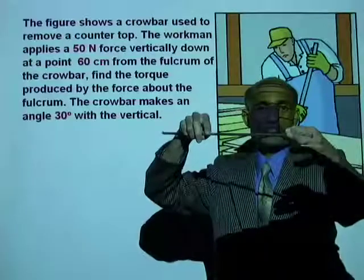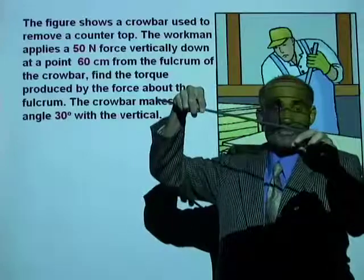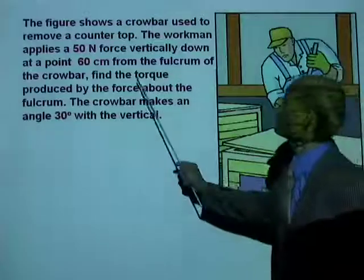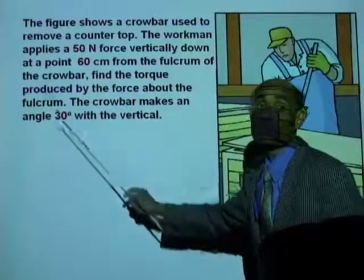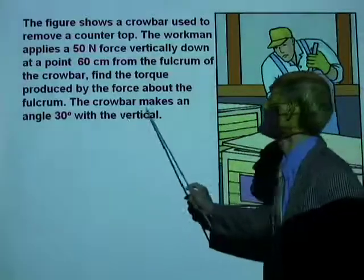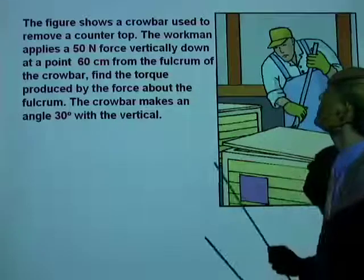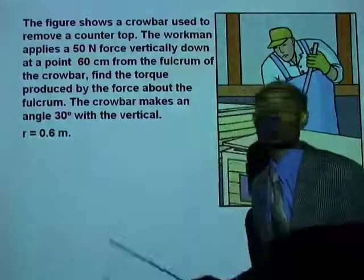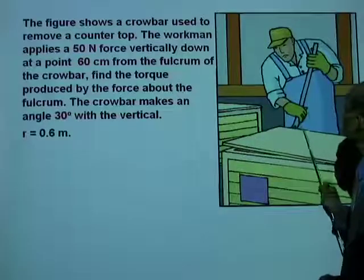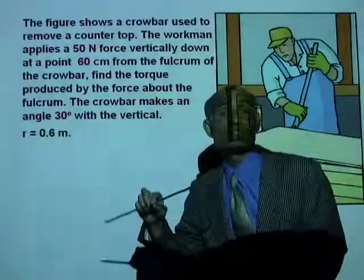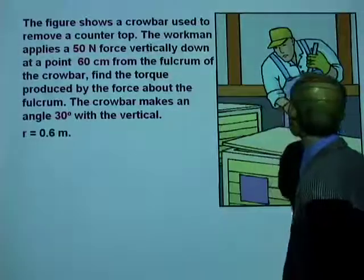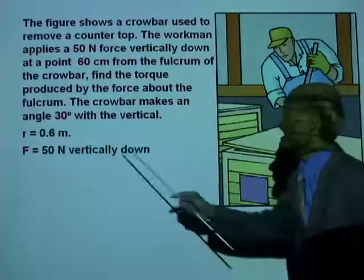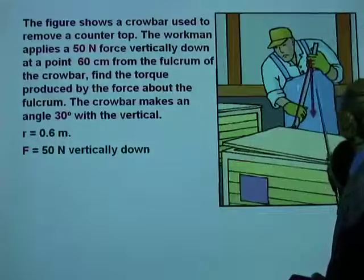The workman applies a force of 50 Newton vertically down at a point 60 centimeters from the fulcrum. Find the torque produced by the force about the fulcrum. The crowbar makes an angle of 30 degrees with the vertical. So R equals 0.6 meter — the length of the crowbar is the torque arm — and F equals 50 Newton acting vertically down.